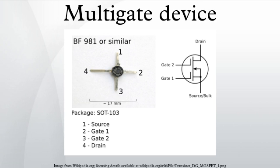A 25-nanometer transistor operating on just 0.7 volts was demonstrated in December 2002 by TSMC. The Omega FinFET design is named after the similarity between the Greek letter omega and the shape in which the gate wraps around the source-drain structure. It has a gate delay of just 0.39 ps for the n-type transistor and 0.88 ps for the p-type. FinFETs can also have two electrically independent gates, which gives circuit designers more flexibility to design efficient, low-power gates.